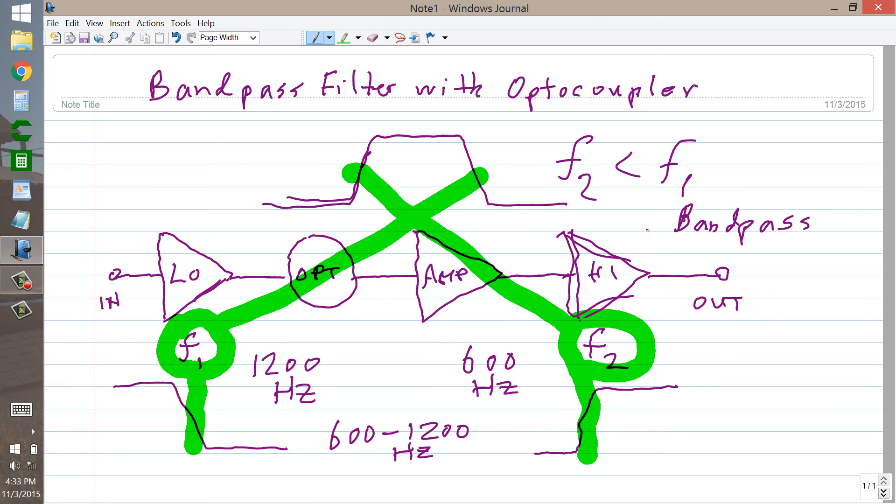So this only works when you have F2 less than F1 so that you get a range where signals can go through. So it's a low pass filter followed by a high pass filter with the frequencies just so to allow signals to get through within a band between the two cutoff frequencies.